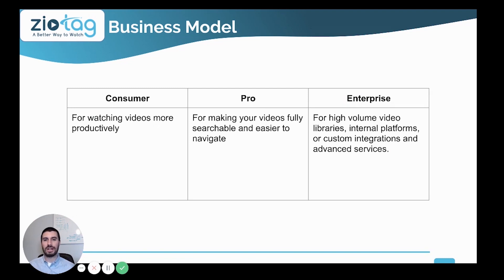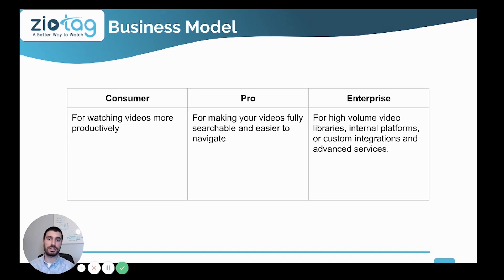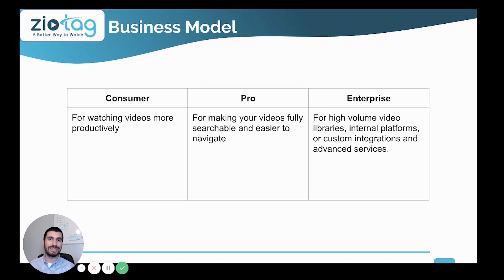Our business model has three different tiers. We have consumer for people who want to watch videos more productively, which they can do with a free account or pay to get transcription and auto tagging services. Our pro users are buying a subscription to get auto transcriptions, auto tagging, data and analytics on their video stats around what people are clicking, and the ability to embed their videos on their own website.